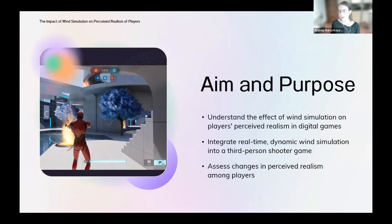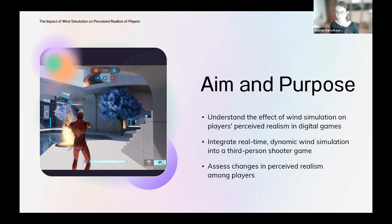In this study, our aim was to understand the impact of wind simulation on players' perceived realism in digital games. Game realism encompasses various dimensions besides graphics, like narrative interaction, character actions, and environmental background. Game realism is often centered on high visual fidelity, whereas subtle elements like wind effects contribute significantly to the immersive experience. We wanted to touch on this part of game realism with dynamic wind simulation, integrating it into a third-person shooter game.